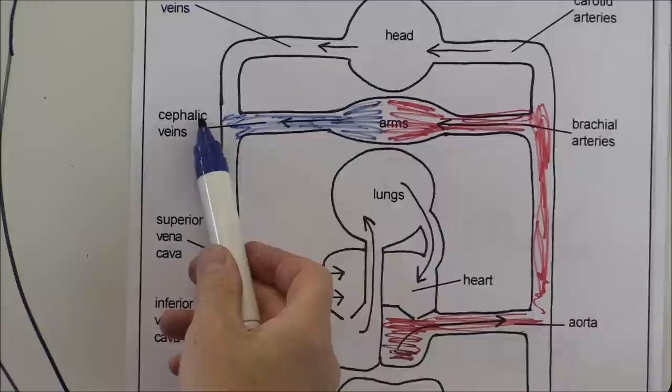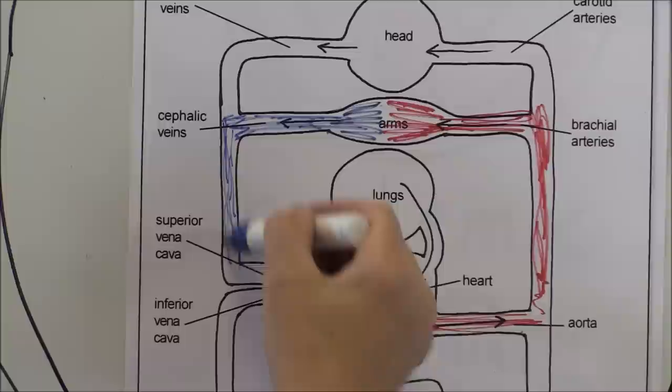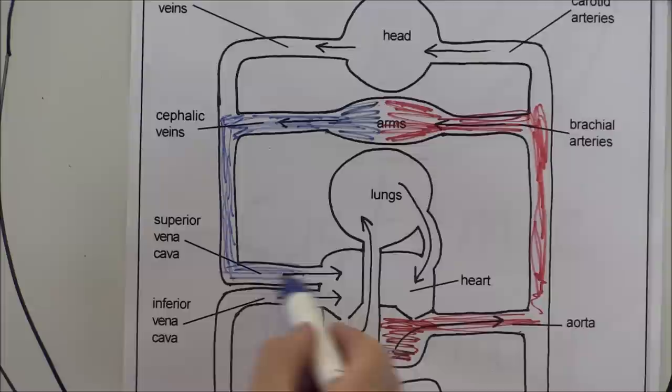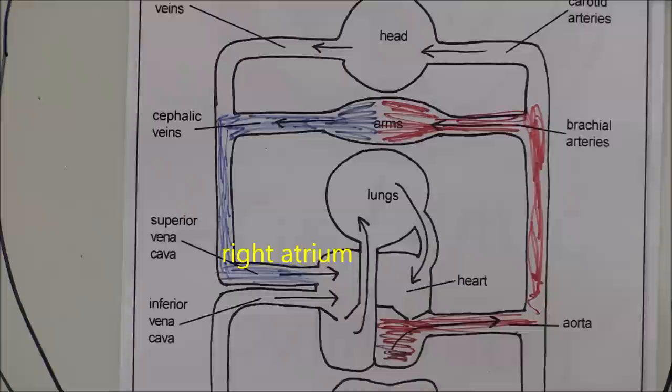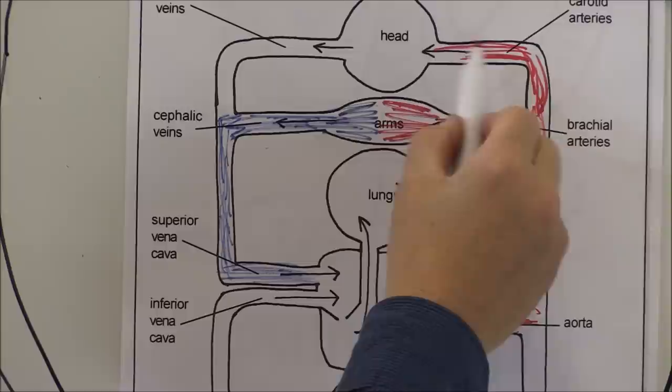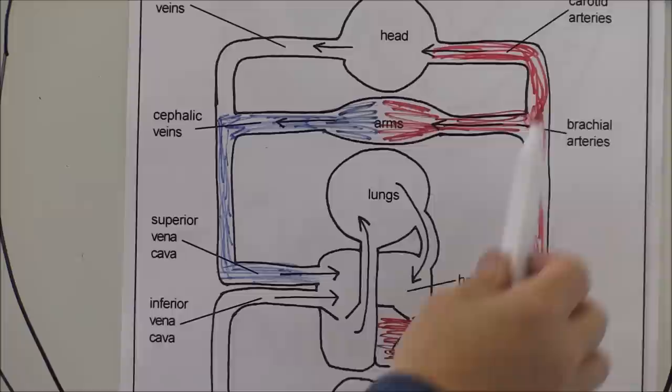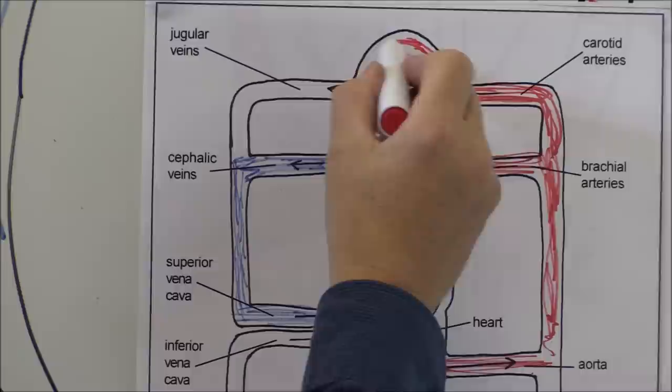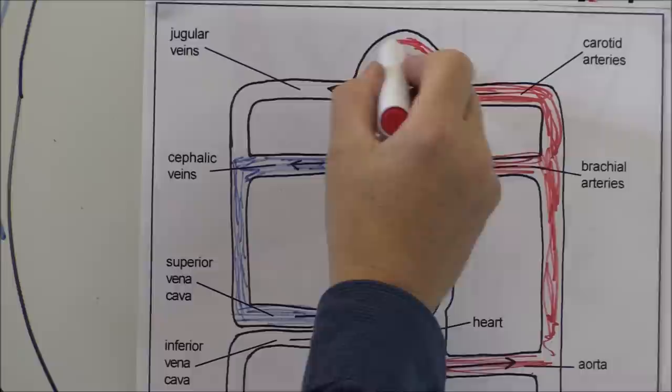One of the large veins in the arm is called the cephalic vein, and that is eventually going to drain back into the superior vena cava to go back to the right atrium. Other blood from the aorta is going to go up towards the brain and the head. Two of the large arteries carrying blood towards the brain are the carotid arteries, which you can feel pulsating in the neck, taking oxygenated blood to the head and the brain.